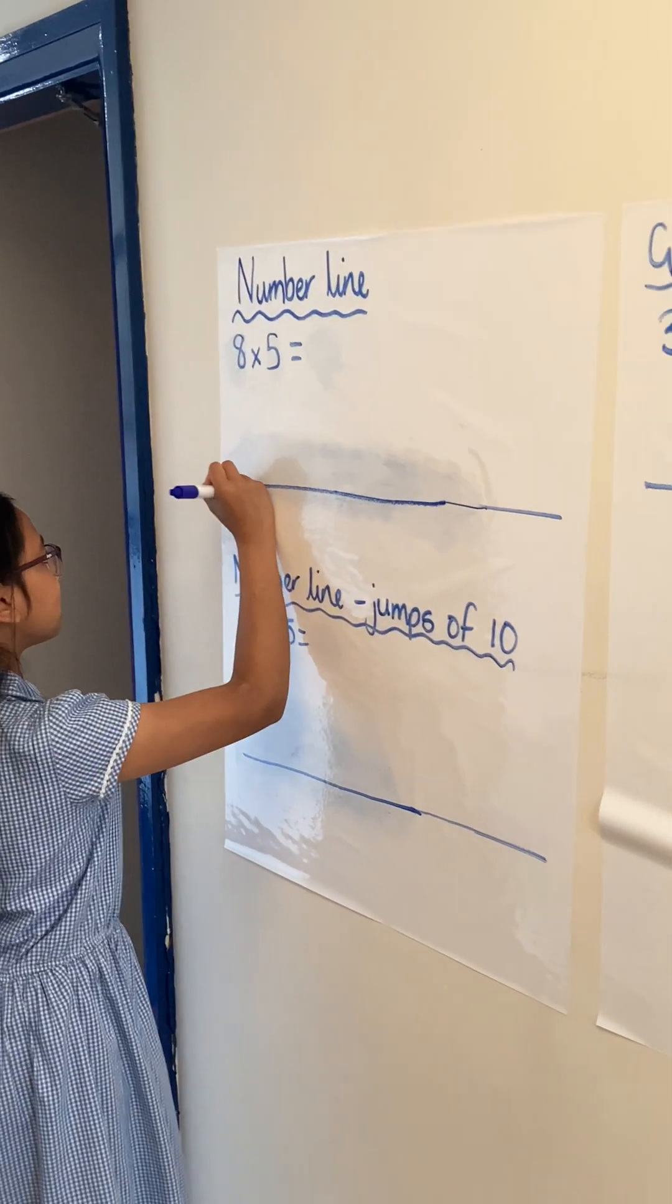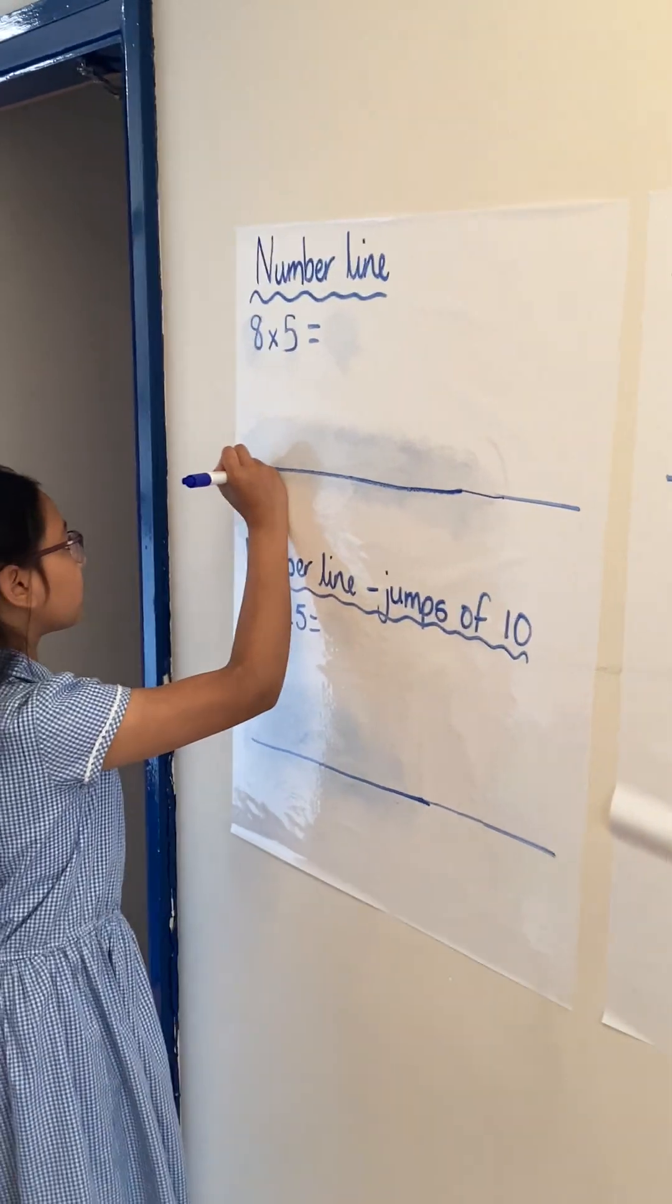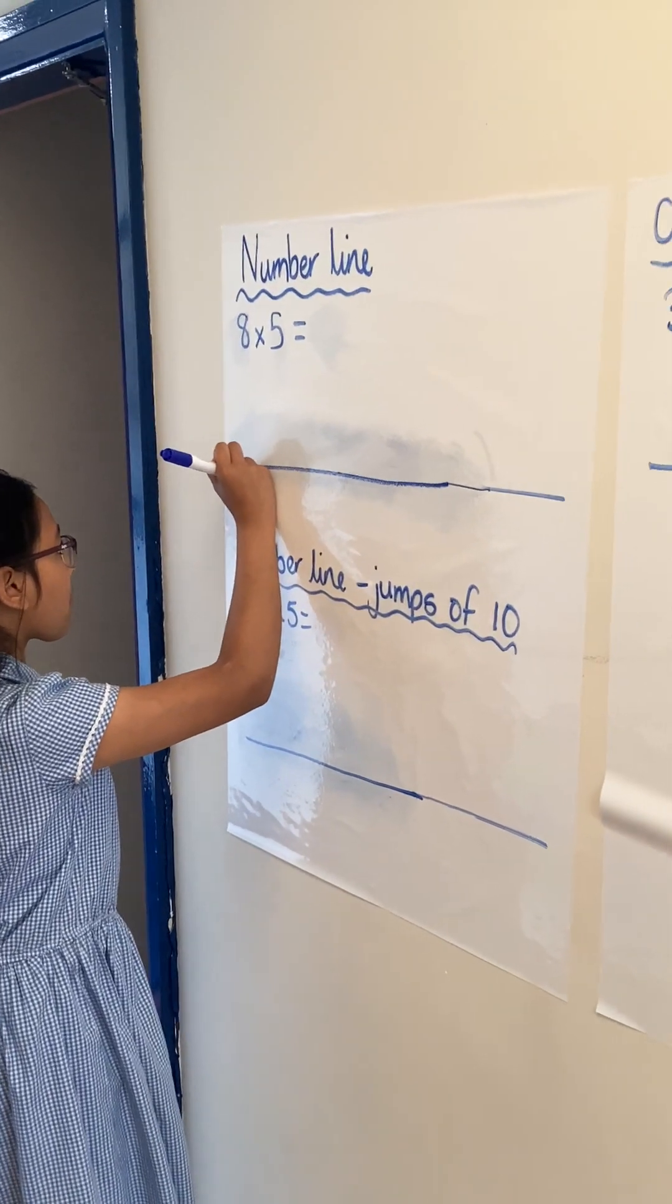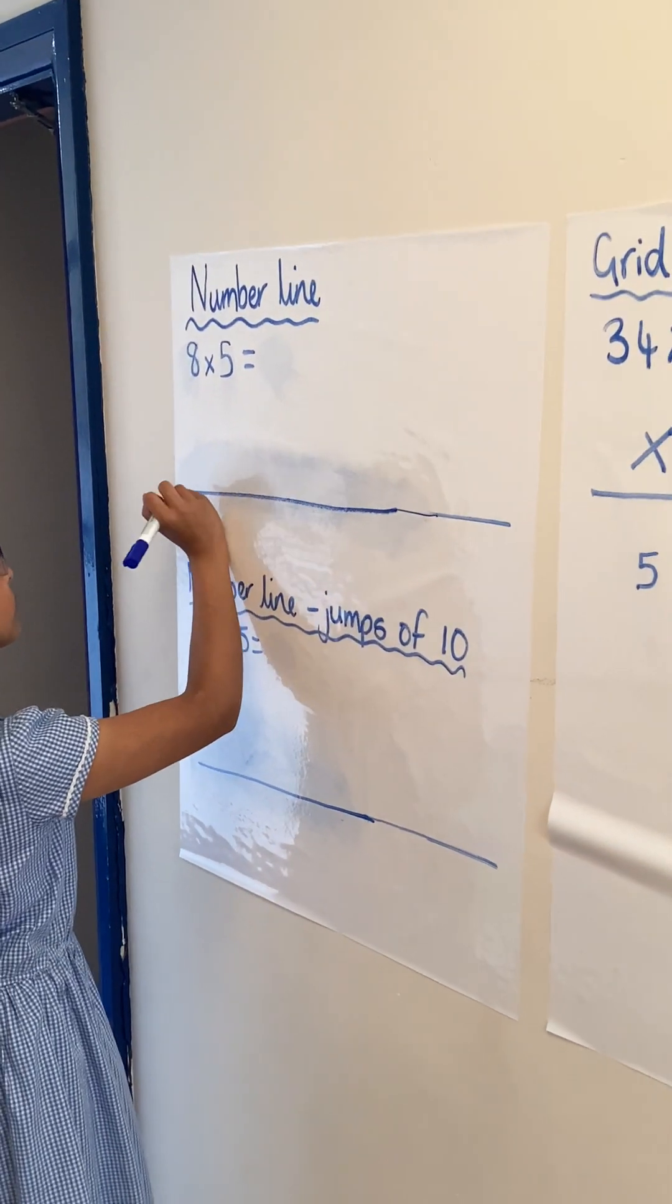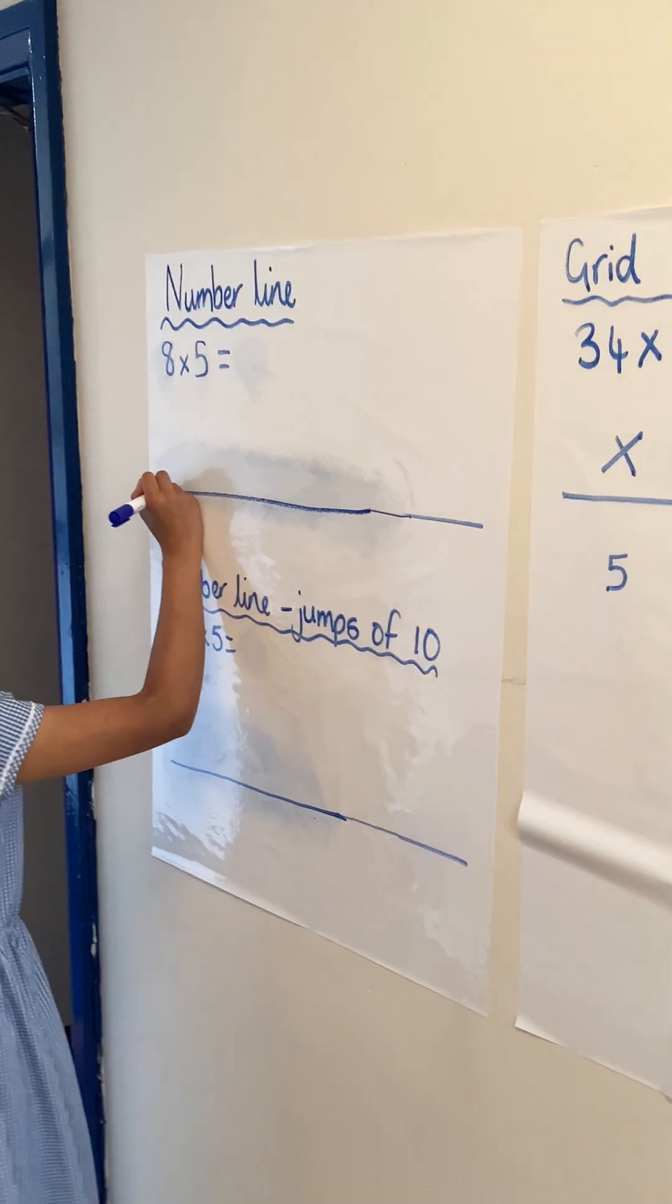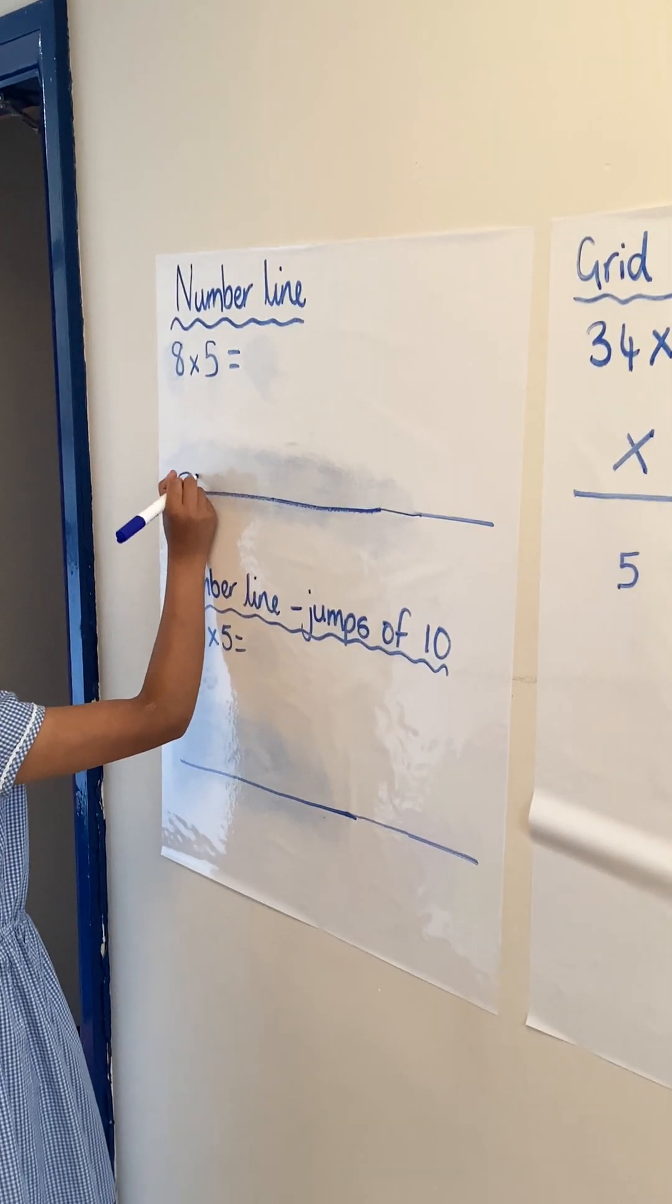We're looking at formal written methods for multiplication, so we always start with a number line. So we've got 8 times by 5. We always start by putting a 0 on the number line, and then we're going to do 8 jumps of 5.